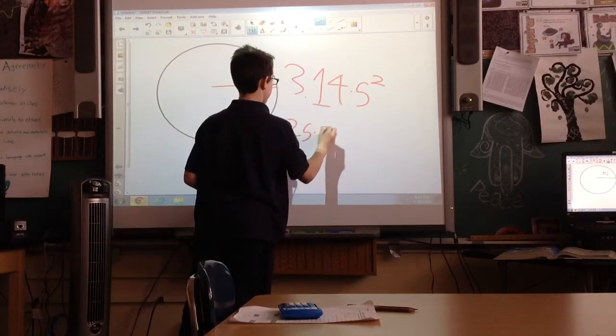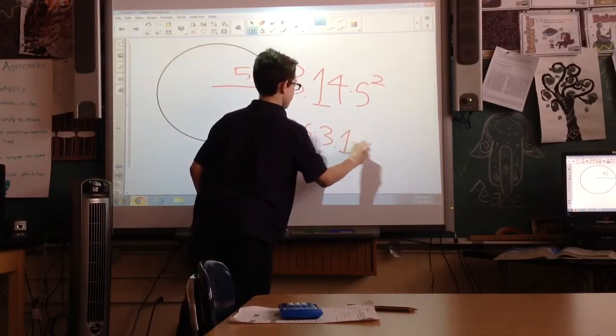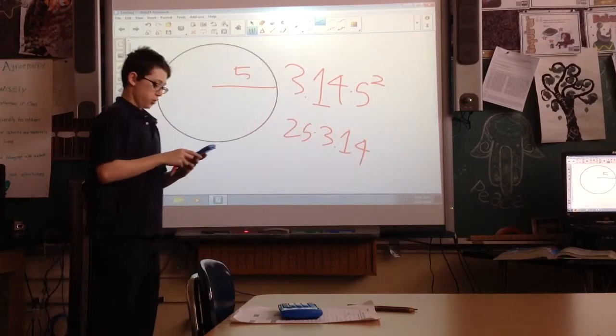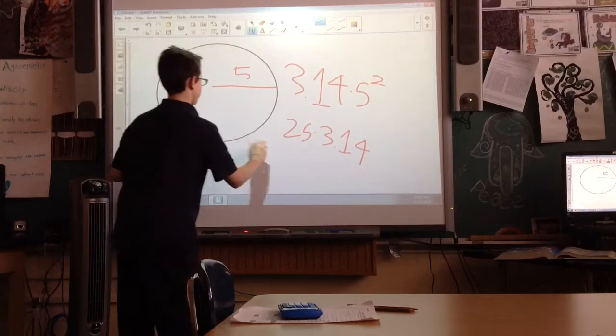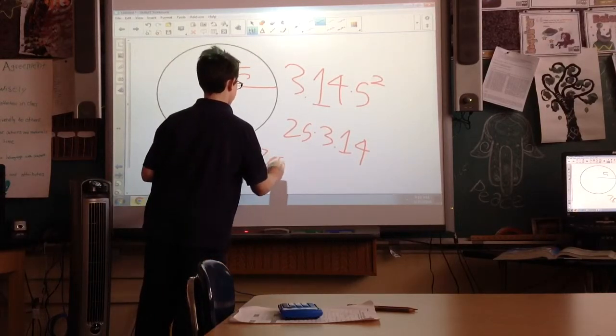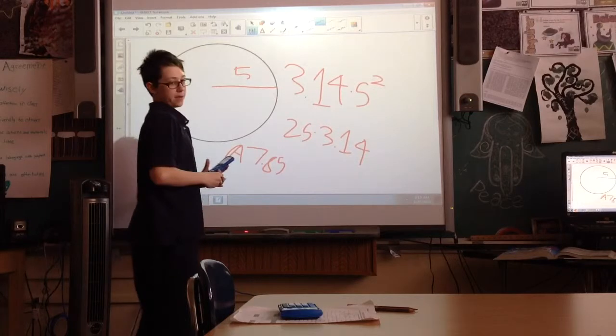So we have to take that and multiply it by 3.14. 25 times 3.14 equals 78.5. The area of this is 78.5.